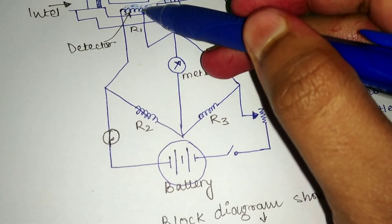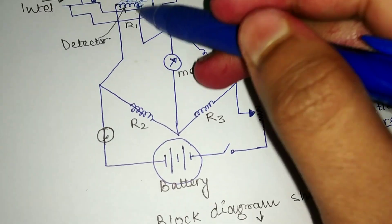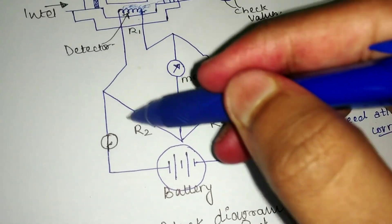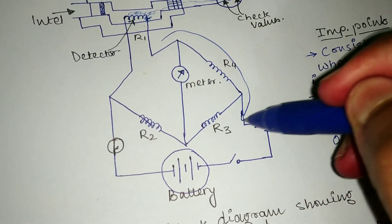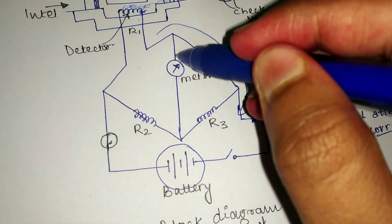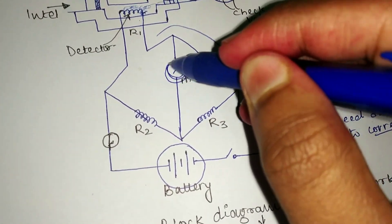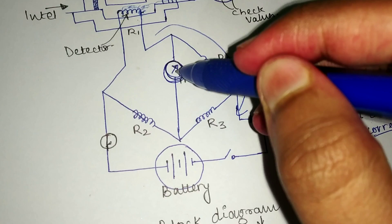Now current will flow through the circuit and you can see the readings in this galvanometer. Basically, this current is proportional to the amount of gas present in the atmosphere.